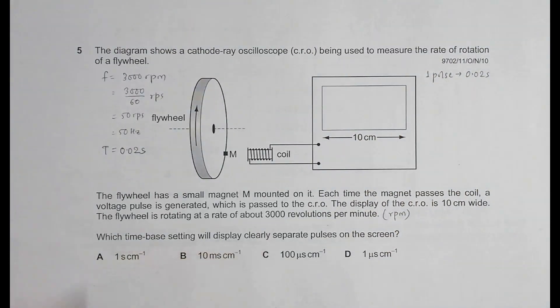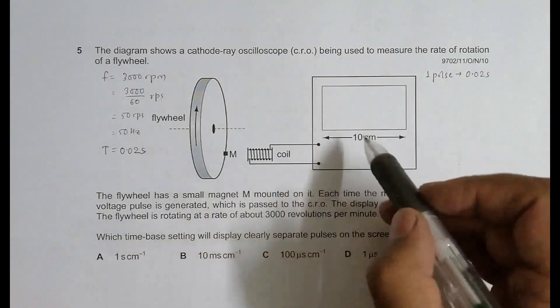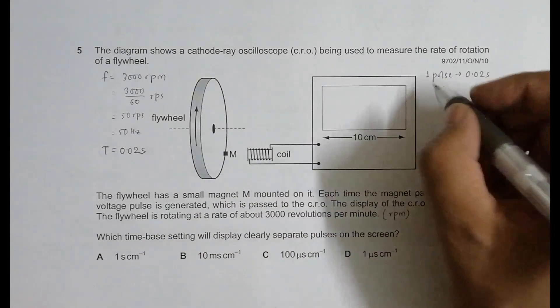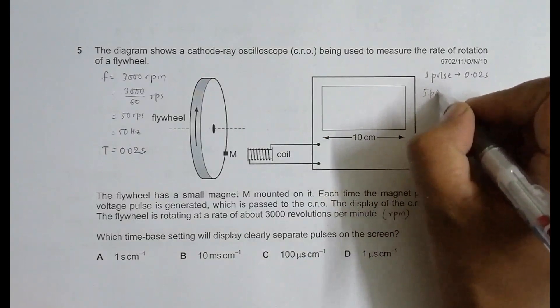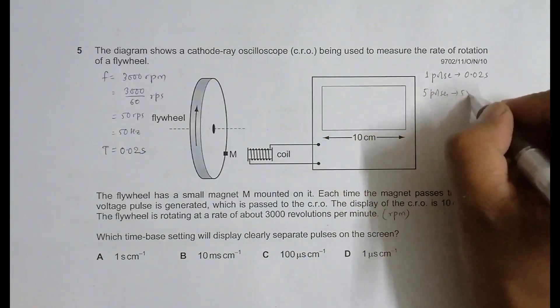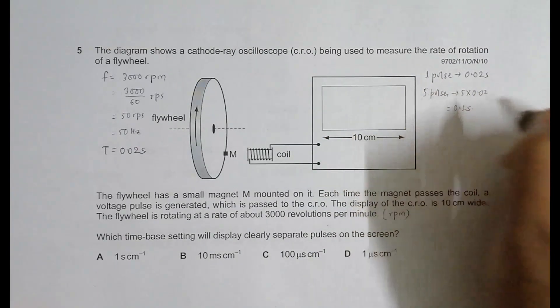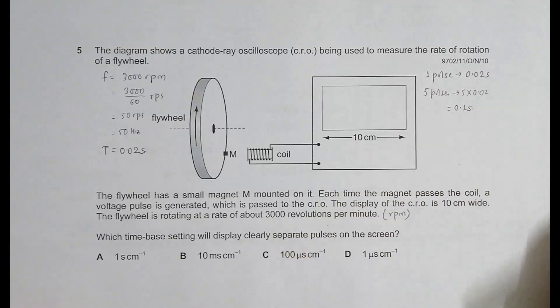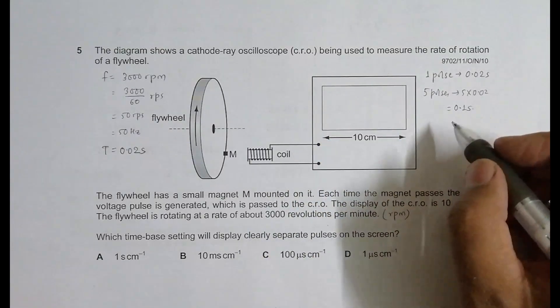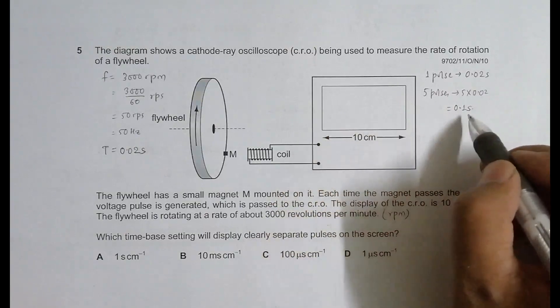Which time base setting will display clearly separate pulses? We want to see separate pulses. Since we have 10 centimeters here, let's say we can see 5 pulses. Five pulses means a total time of 5 times 0.02, which equals 0.1 seconds. So if I have to show 5 pulses, this whole screen should show 0.1 seconds.